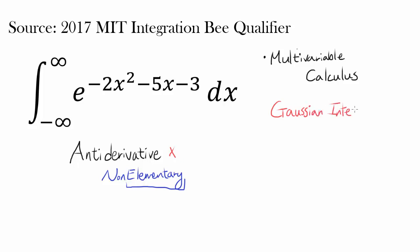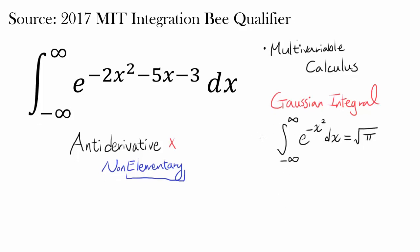The Gaussian integral is a very famous integral, especially in statistics, because it has a close connection with normal distribution. It is the integral from negative infinity to infinity of e to the negative x squared dx. This fascinating integral actually evaluates to square root of pi. I'm going to prove it in this video, and using the same technique we'll then evaluate the integral given to us.